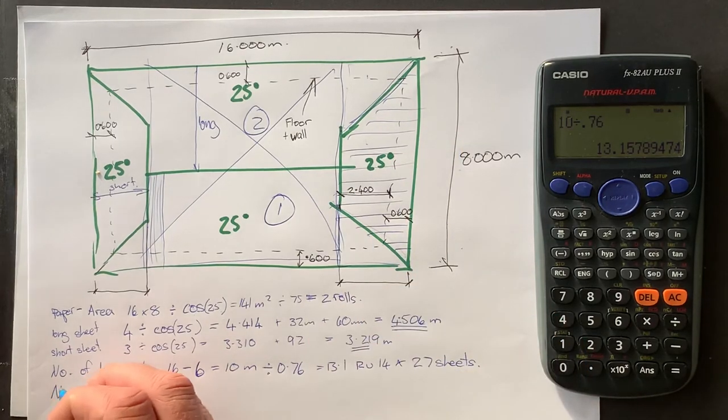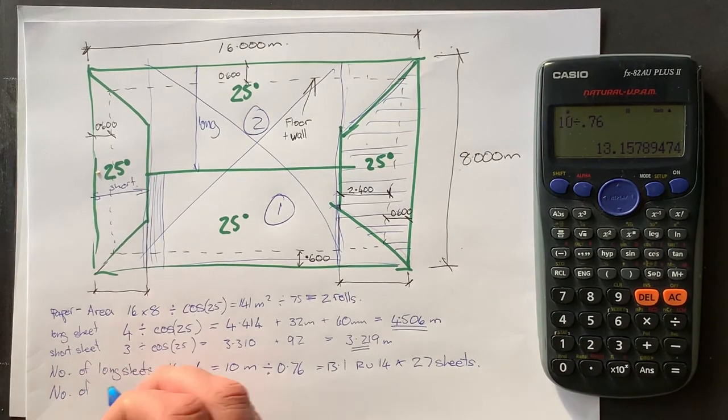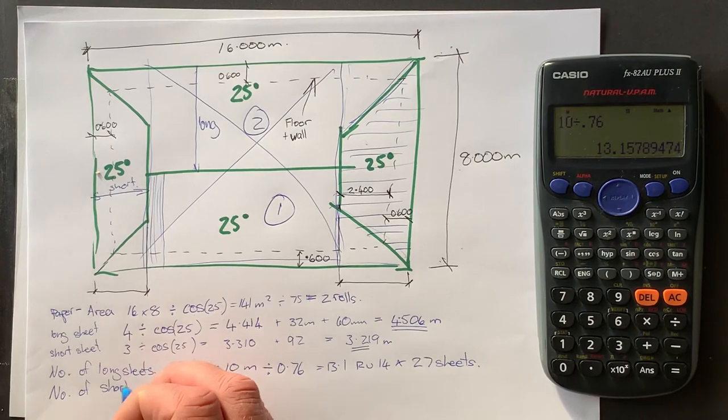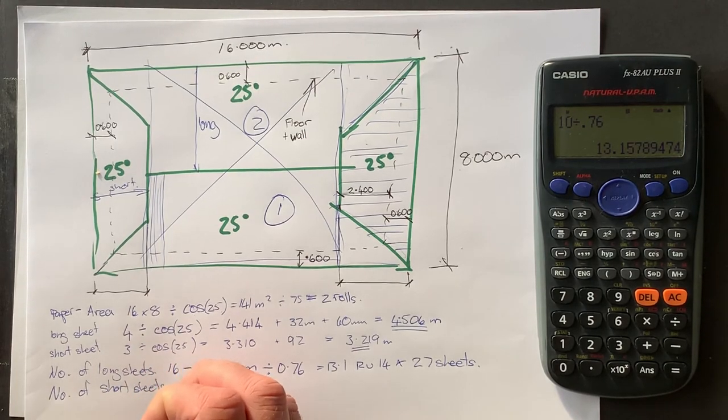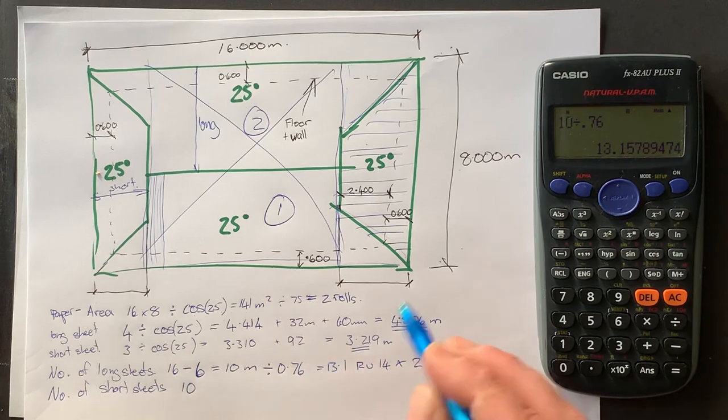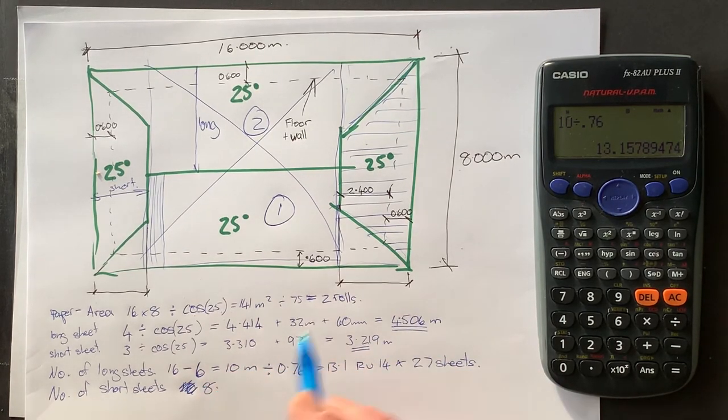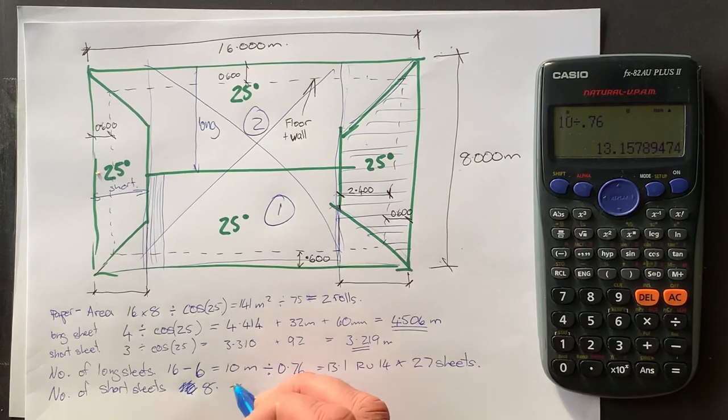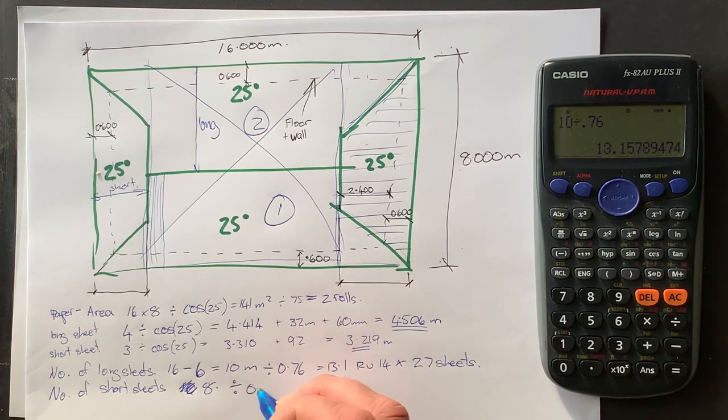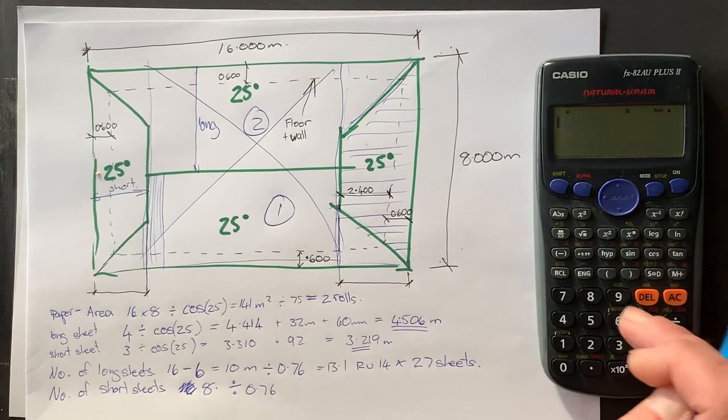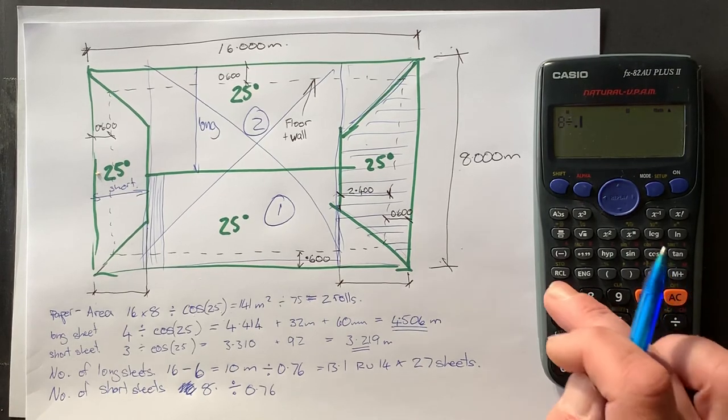I know it looks like it would go there, but the problem with that is the overlap of the sheet is in the wrong place. And just as this off cut here will end up up there. So the number of short sheets, we say eight meters down there. We divide that by 0.76.